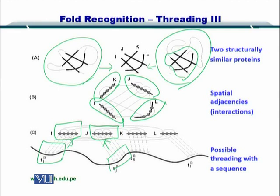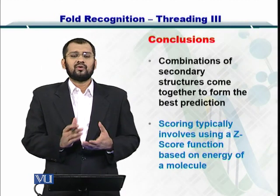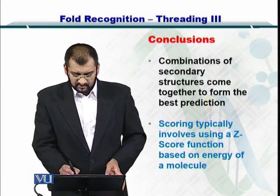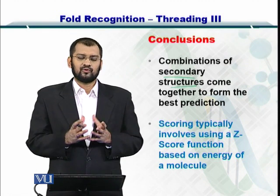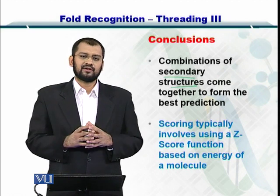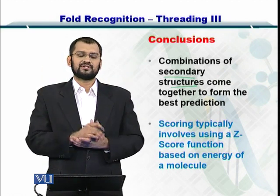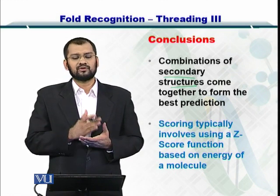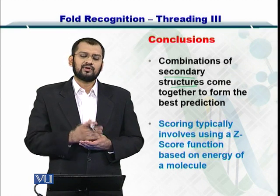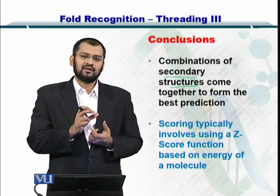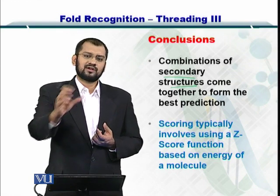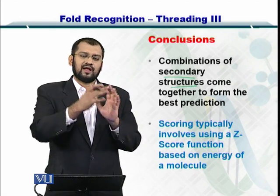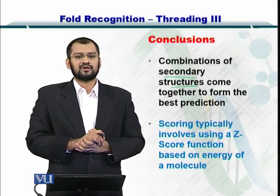Therefore, your overall structure will be a combination of folds from different structures in the PDB. To conclude, secondary structure combinations come together to create folds, and different folds come together to create the overall tertiary structure of the protein. In fold recognition or threading, your job is simply to find out which fold in a specific protein matches your sequence, and by taking these different folds from different protein structures, you bring them together to create a tertiary structure for the protein.